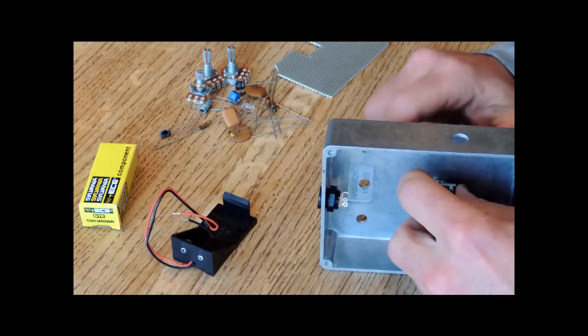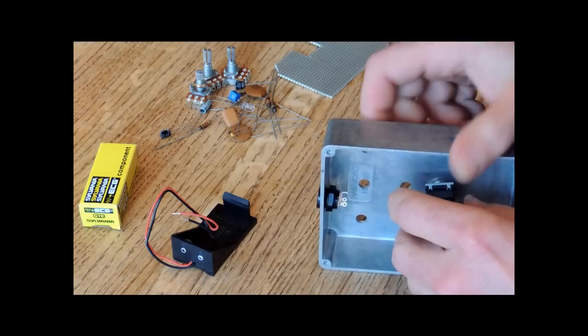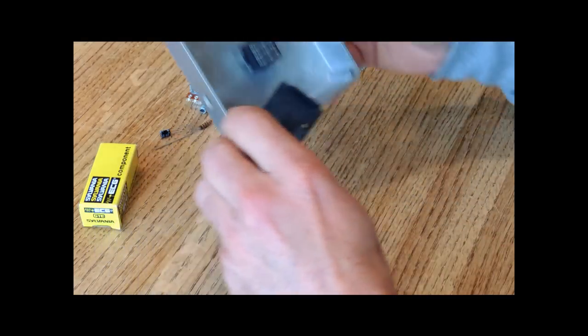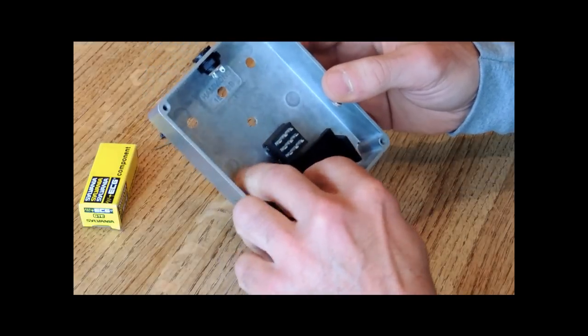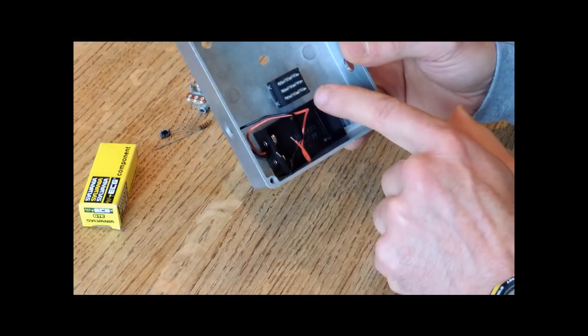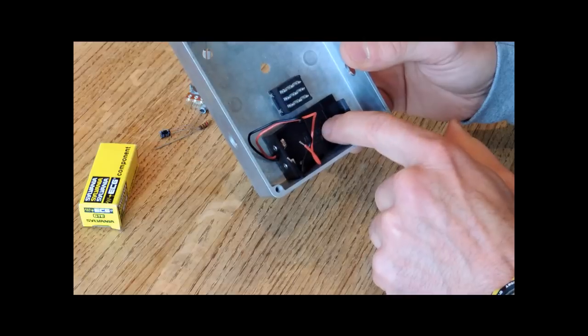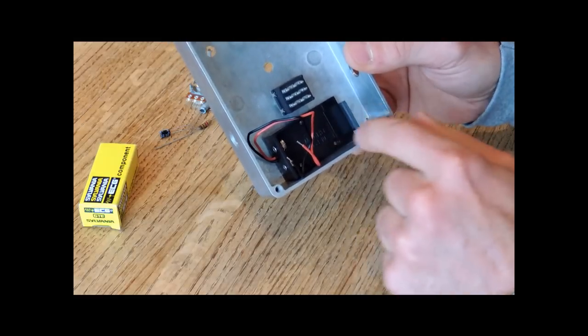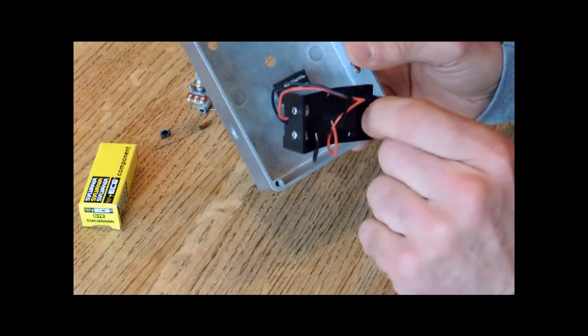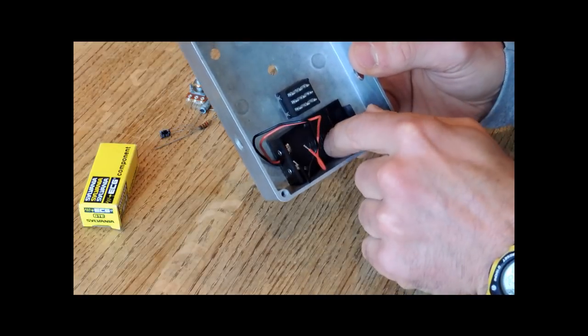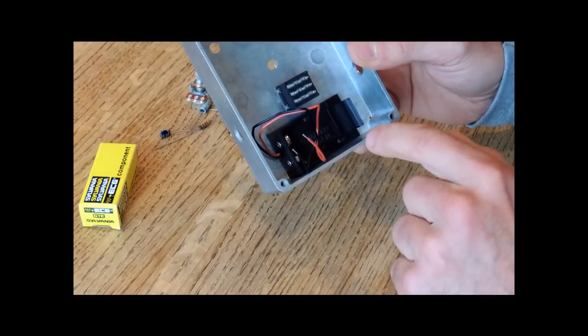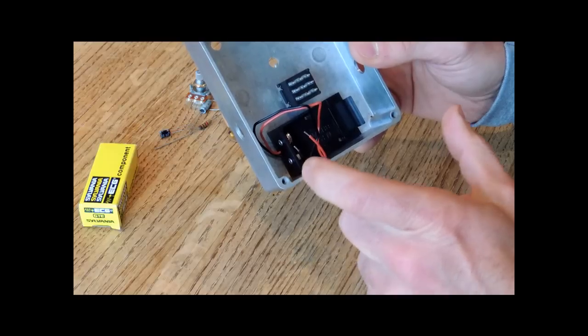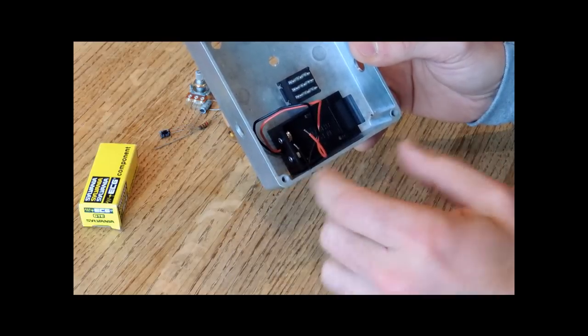You'll see now that there should be clearance between the bottom of the pedal switch and the placement of where the battery holder goes. You don't necessarily have to use one of these. I like these because they allow the battery to sit in there. We're going to glue that in there and it won't let the battery flop around and rattle inside the enclosure.